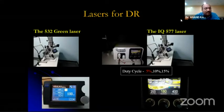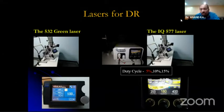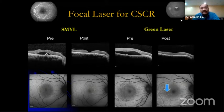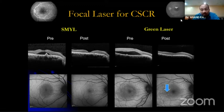For lasers in DR, the conventional 532 nm green laser is used, and the newer IQ 570 where we prefer 5% duty cycle. Focal laser for focal leaks and CSR is still very much in vogue. The subthreshold micropulse laser and the green laser have been shown to have equivalent efficacy for CSR. With subthreshold micropulse yellow laser you do not see tissue trace on autofluorescence maps as you do with the green laser, making it much less tissue toxic.